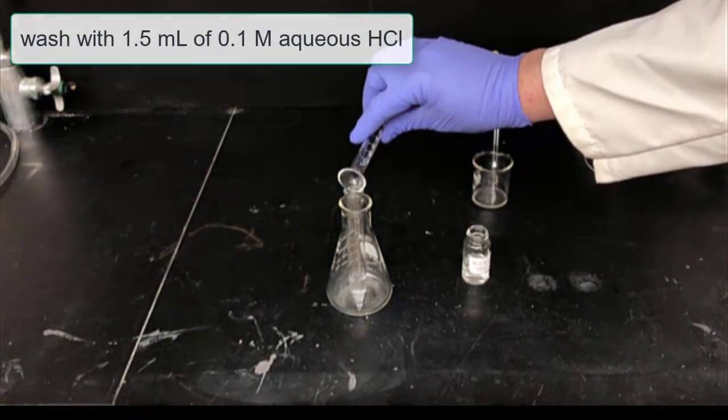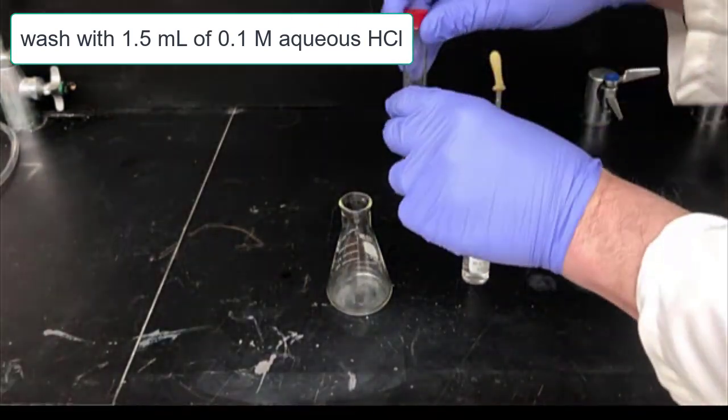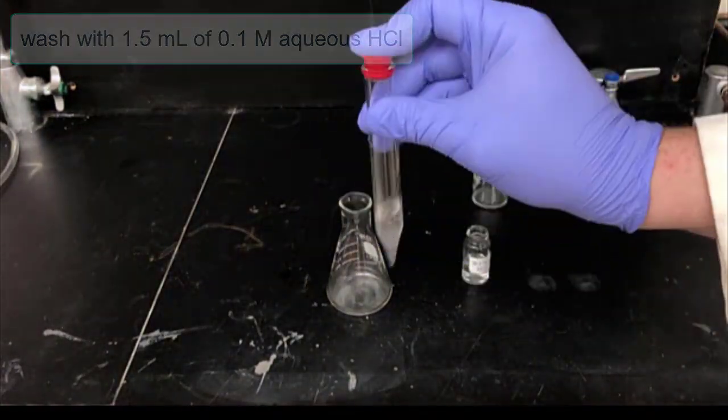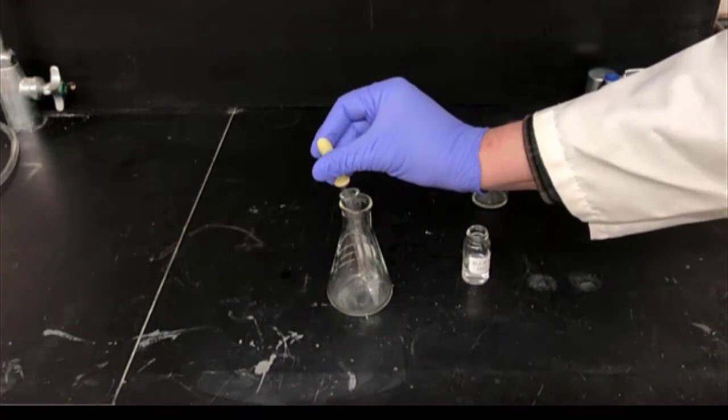Next, we'll add 1.5 milliliters of a 0.1 molar solution of HCl to the centrifuge tube and agitate it. The point of this is to remove any sodium hydroxide that might be left. Again, remove the lower aqueous layer and discard it.